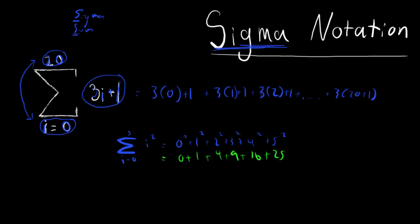Now let's add these all together. 0 plus 1 equals 1, 1 plus 4 equals 5, 5 plus 9 equals 14, 14 plus 16 equals 30, 30 plus 25 equals 55. So all in all, this equals 55.